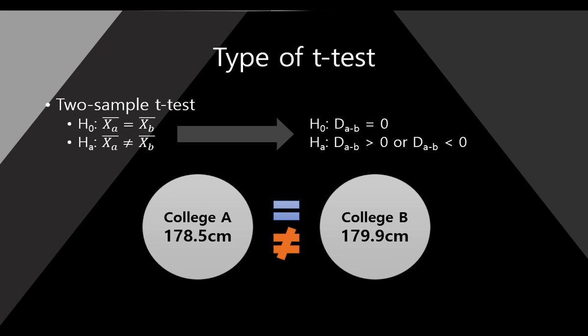First, two-sample T-Test. As you can see here, we have two tests. This was the same as we learned in prior classes. We have two samples of College A and College B, and we want to know if these two colleges' male students' heights are the same or not.